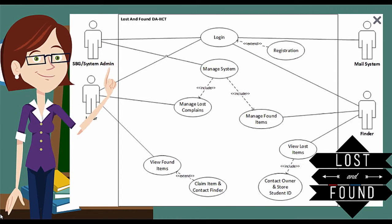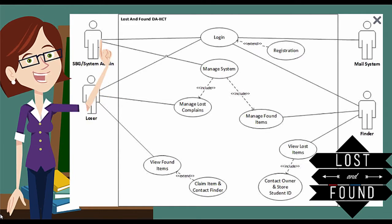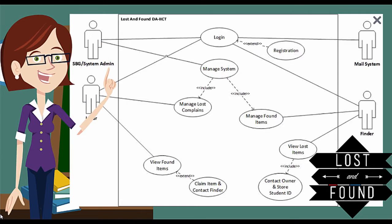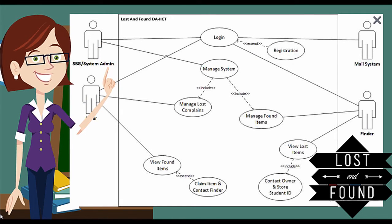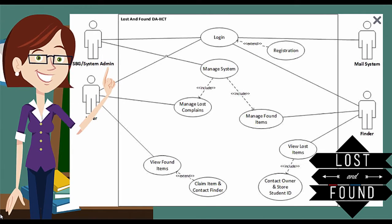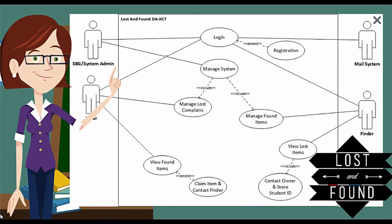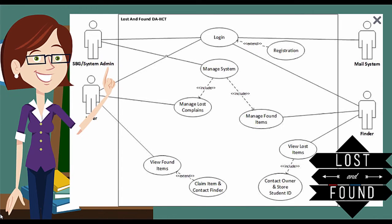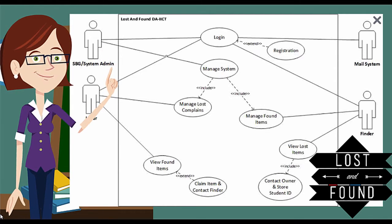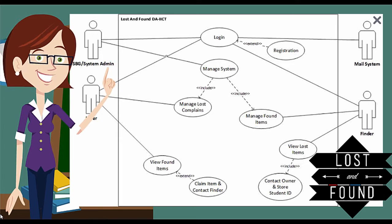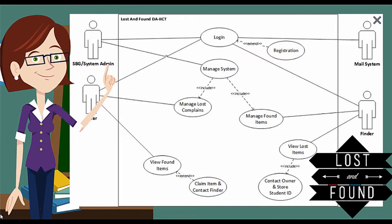The lost complaint will be managed by the loser, while the found items will be managed by the finder. This is represented as an include relationship, meaning that manage system includes two parts: managing lost complaints and managing found items.